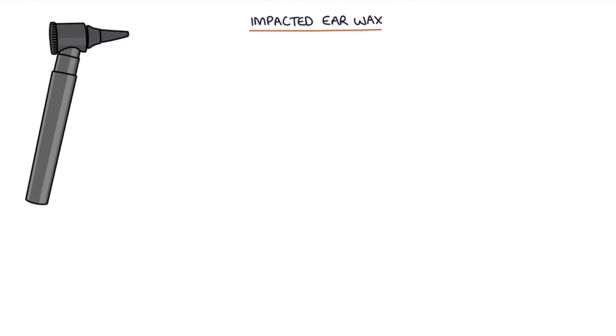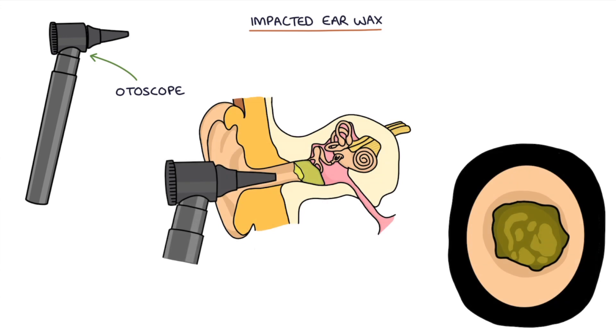Earwax can be seen on examination with an otoscope. It may completely cover the tympanic membrane, preventing assessment of the tympanic membrane and the inner ear.